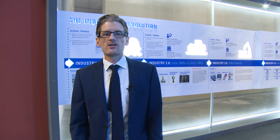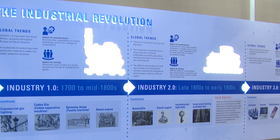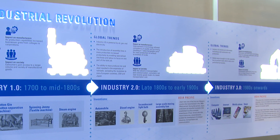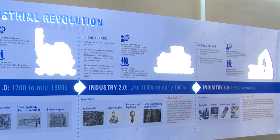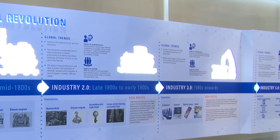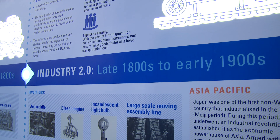So we are here in Zone 1. This is the introduction to Industry 4.0. It gives you an overview about the different Industrial Revolutions. You can see here in the background from the first to the fourth Industrial Revolution some key inventions and also the global impact, but also the impact particularly on Asia Pacific.